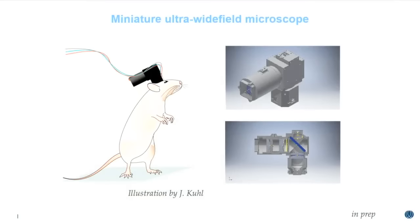I'd like to transition to a new technology we've been working on: a miniaturized ultra-wide-field microscope. FOF was identified by a combination of scholarship and frankly a little bit of luck. What we really want is a systematic mapping of the cortex to identify more nodes involved in integration or brain regions involved in other types of behavior, and that's what this miniature ultra-wide-field microscope was designed to do.